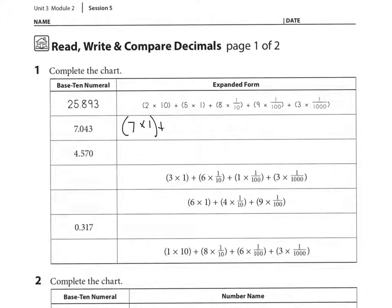So we're going to record 7 times 1. And we're going to add that to, looking at the next place value, it's 0 in the 10th place. So we're going to say 0 times 1 tenth. And we're going to add that to 4 times what place value is the 4 in? The digit 4 is in the 100ths. So we're going to say times 1 over 100. And looking at the 3, the 3 is in the 1,000th place value. So we're going to say 3 times 1,000.